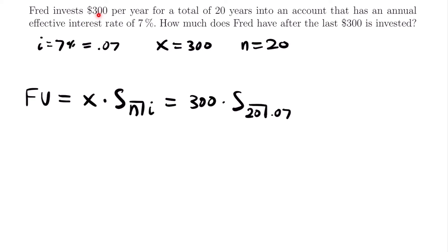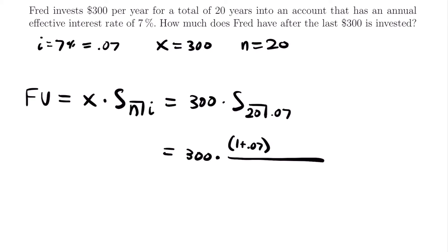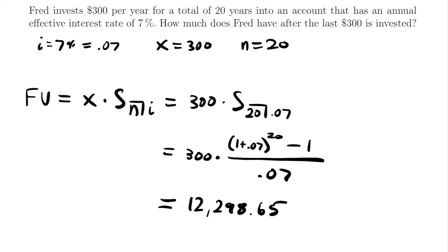Using our future value of an annuity formula, the future value equals 300 times s-angle-20-at-0.07. Expanding the formula, this equals 300 multiplied by (1 plus 0.07 to the power of 20, minus 1) divided by 0.07. Plugging this into our calculator, we find the future value equals $12,298.65. That is how much Fred has in his account after that last payment of $300 was invested — and you can see how much quicker this formula is compared to writing out every individual term.